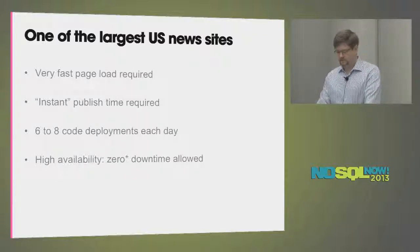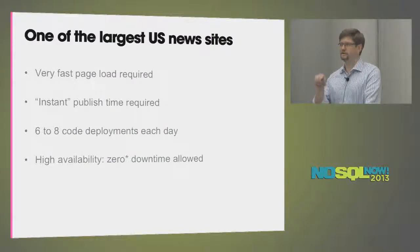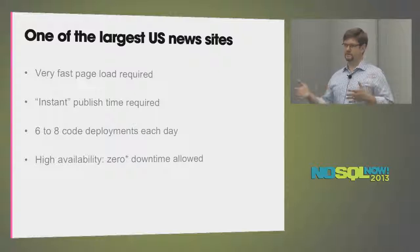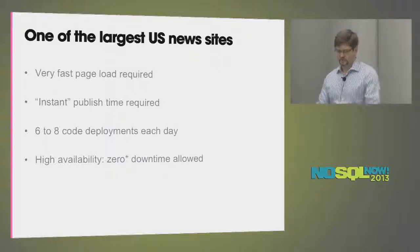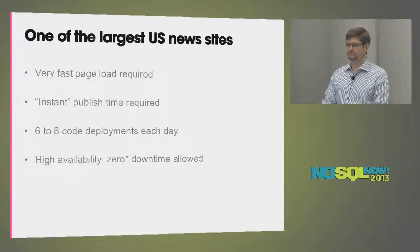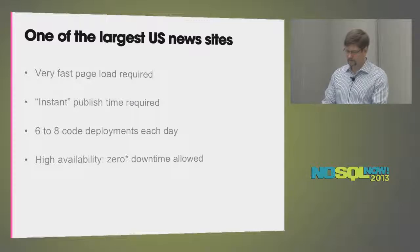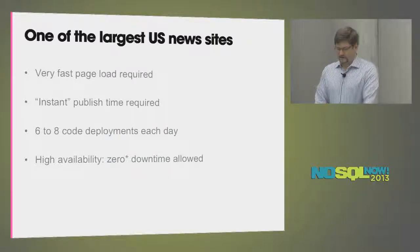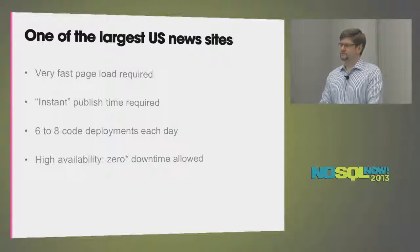We also have an instant publish time requirement. One of the measures that our editors use is: when they hit the button, you should be able to flip through the browser and see the update. There's the usual tension between data freshness and caching to achieve scalability. We're also deploying six or eight times a day — whether it's new advertising, new news events, or new features. The ability to deploy continuously without any downtime is very, very important. Zero downtime — last week Outlook.com was down for a bit, Amazon was down for a bit.